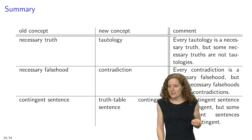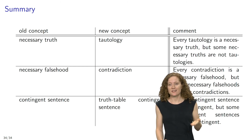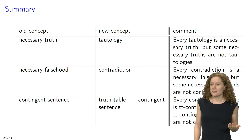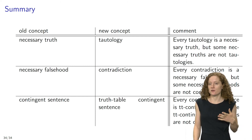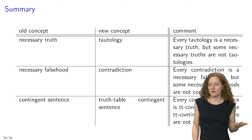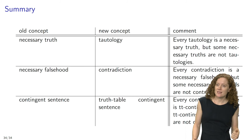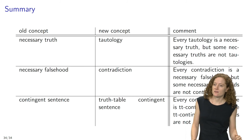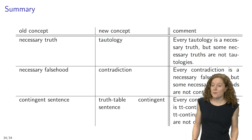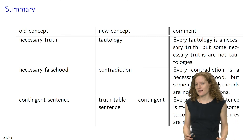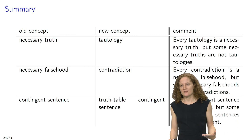A tautology is true on every possible valuation, a contradiction is false on every possible valuation, and a truth table contingent sentence is true on some, but not in all possible valuations. We also saw that whether a sentence is a tautology, a contradiction, or a truth table contingent can be read off the truth table of that sentence, and so we have a method for figuring out whether a sentence is a tautology, a contradiction, or a truth table contingent.